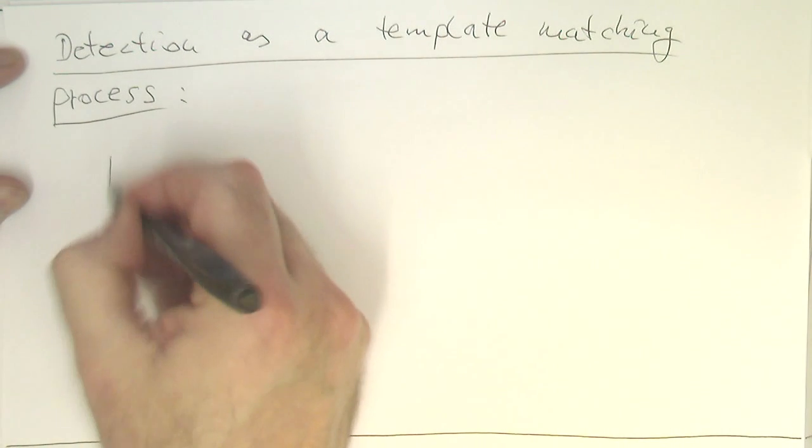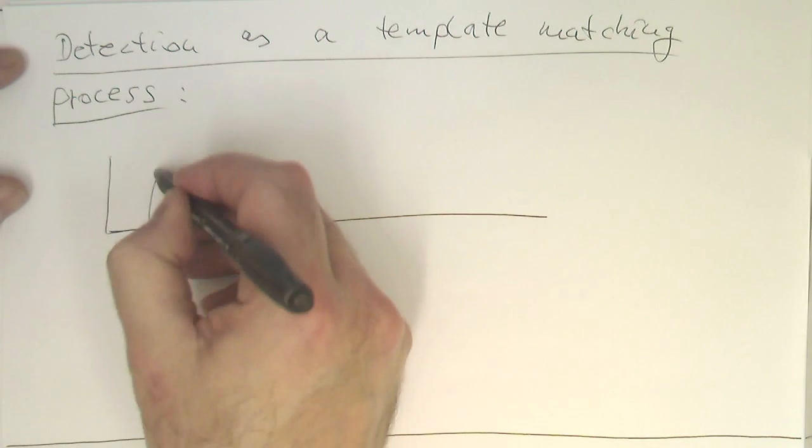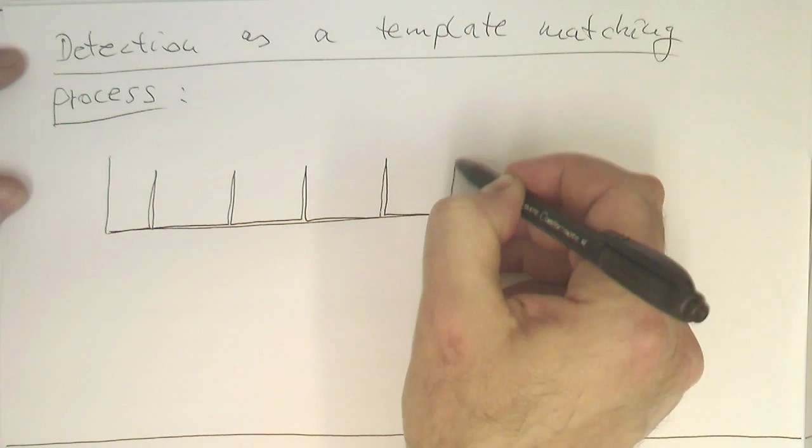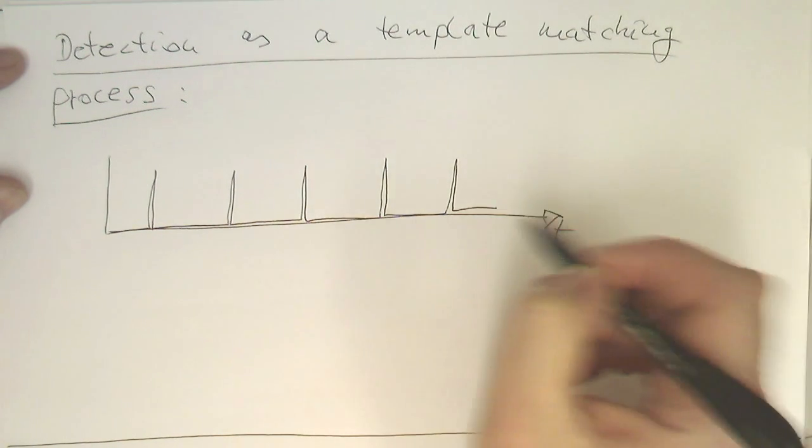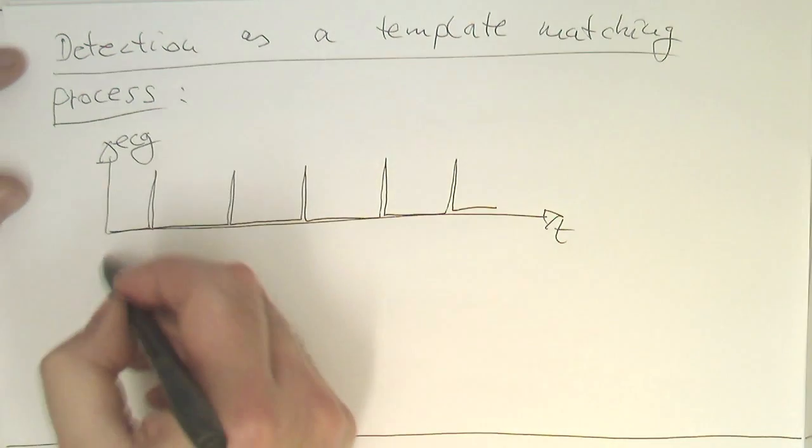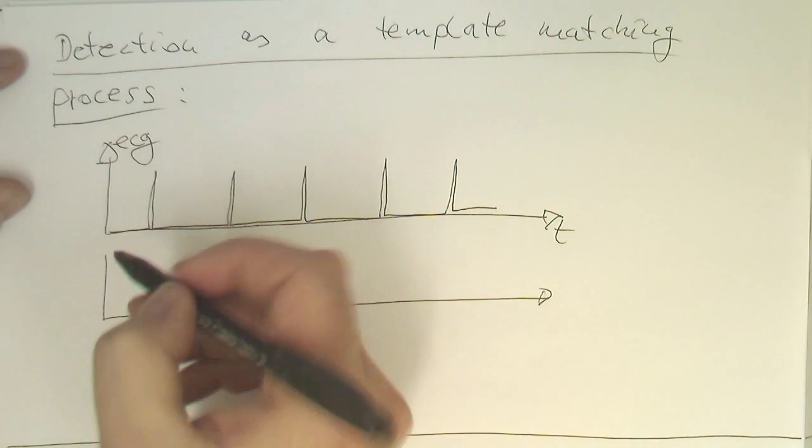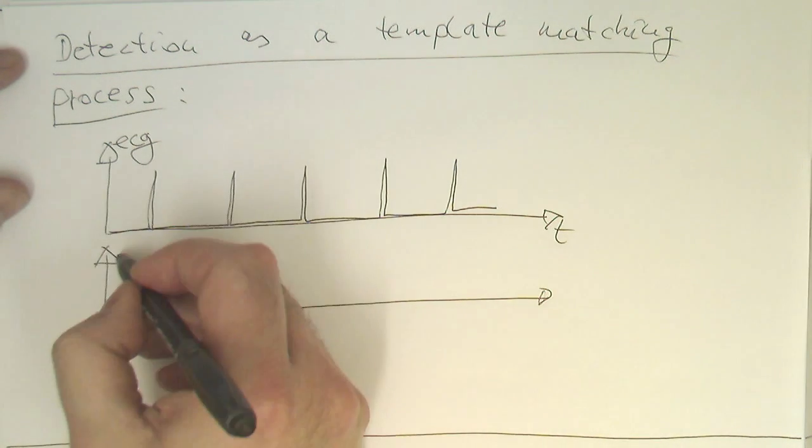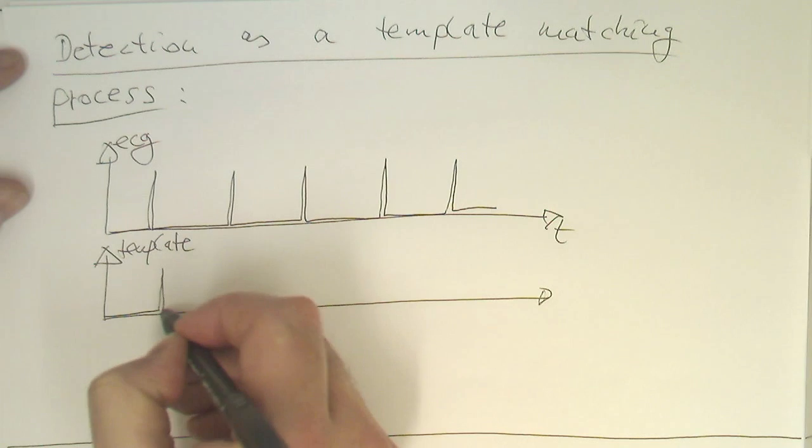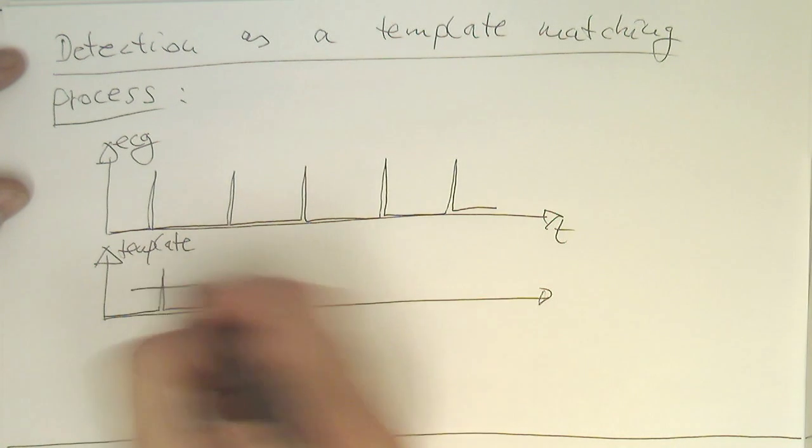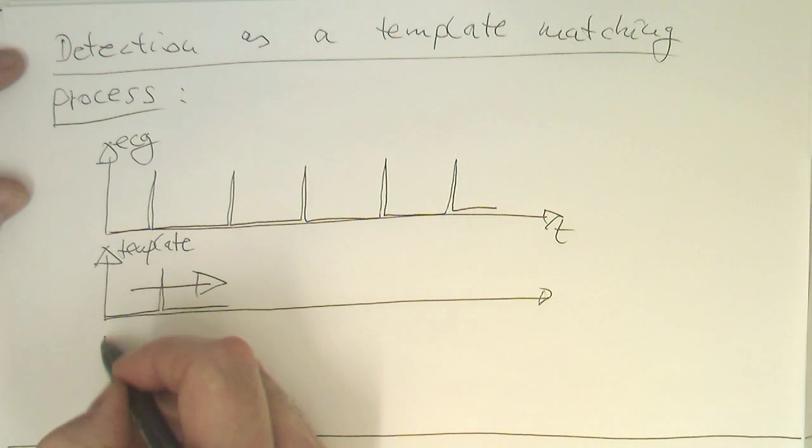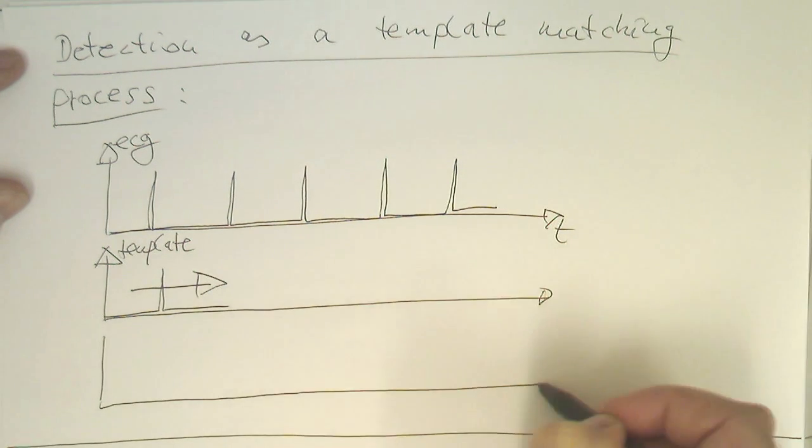So, the idea is the following. Let's now have the ECG a bit more cartoonish. And what we do is, we run a template, which looks exactly like these pulses here, just one pulse over this time here. And if there's a match, then we are generating a pulse.